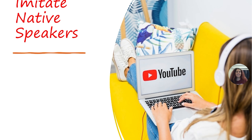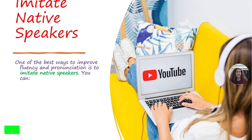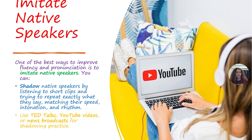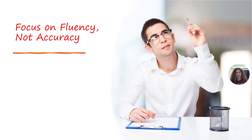The third way is to imitate native speakers. One of the best ways to improve fluency and pronunciation is to shadow native speakers — listen to short clips and try to repeat exactly what they say, matching their speed, intonation, and rhythm. This combines passive and active skills. You can use TED Talks, YouTube videos, or news broadcasts for shadowing practice.